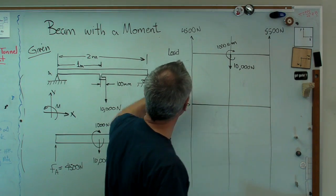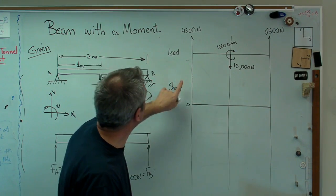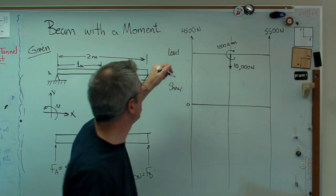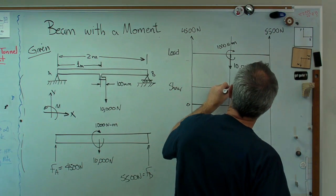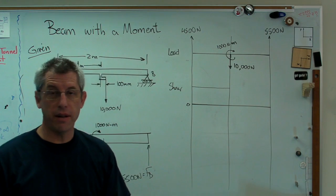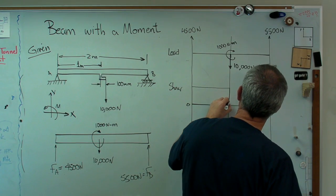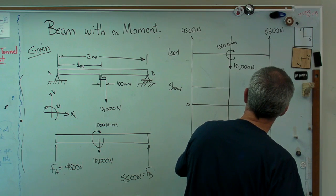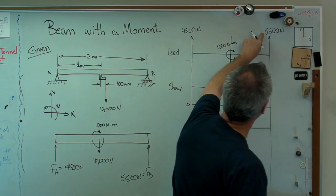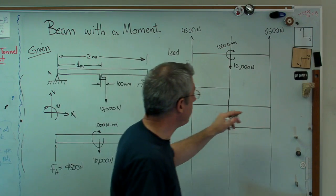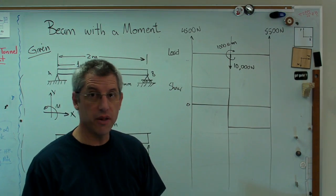Now shear. That's pretty easy, too. Let's go ahead and start from left and go to the right. And any time we find a load, we're going to log that on here. That's going to be zero right there. What's the first thing I do? I go up 4,500 newtons. And then I go over. And I'm going to go down 10,000 newtons.